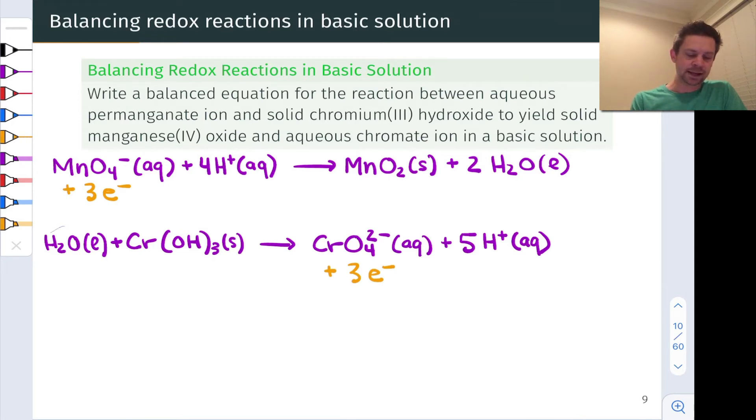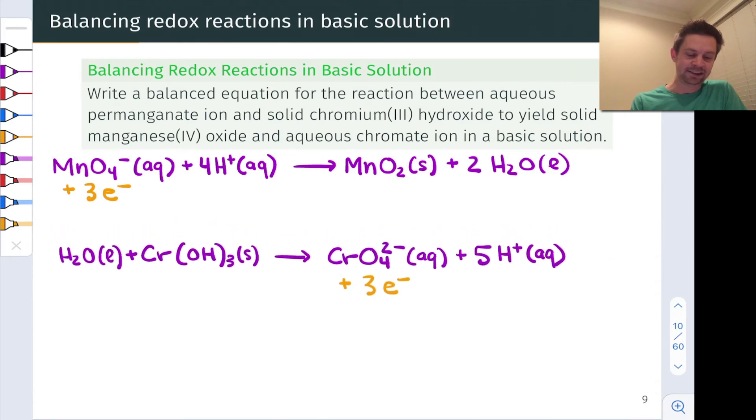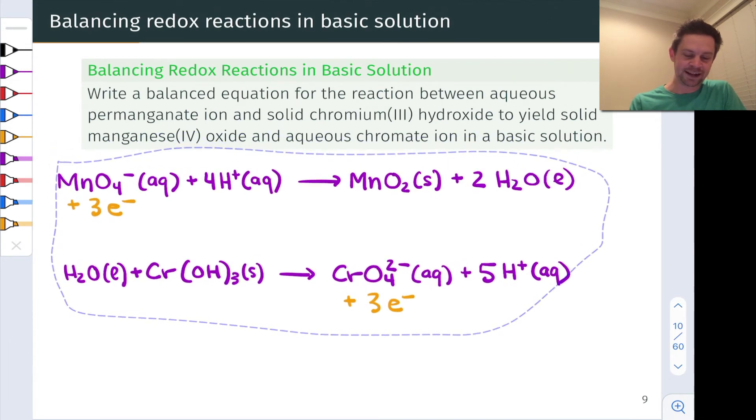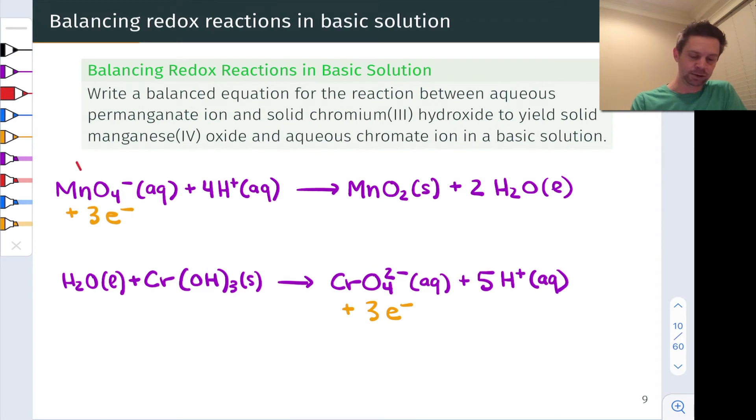The next step here is to ensure that the numbers of electrons transferred are the same in both half reactions, scaling as necessary. And one of the beautiful things about this case is we've got three electrons gained in the first case. Notice this is a reduction process with electrons on the reactant side. And we've got three electrons lost in the second case, making this the oxidation half reaction. And so the beautiful thing about this is we don't need to scale at all. We can simply add everything up to produce the net reaction.